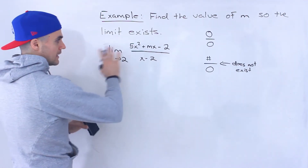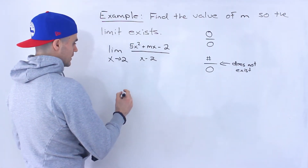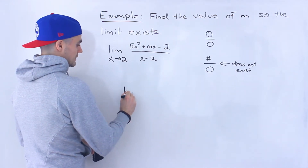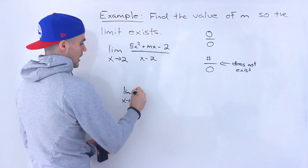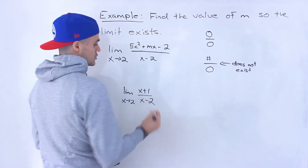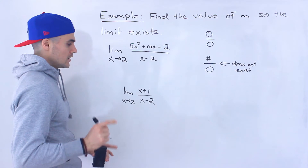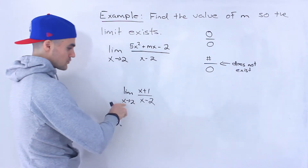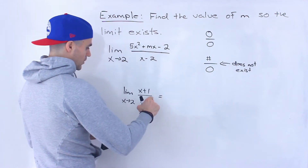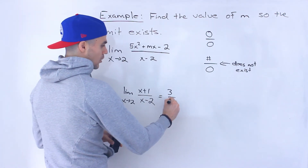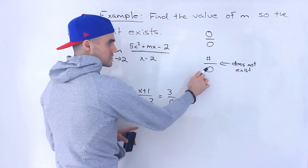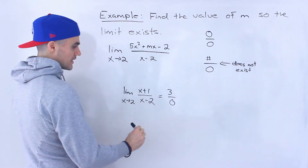Let me show you a different example to illustrate this. Let's say we had the limit as x approaches 2 of (x + 1) over (x − 2). If we do a direct substitution, we're going to end up with 3 over 0. Whenever you get a number over 0, the limit automatically does not exist.